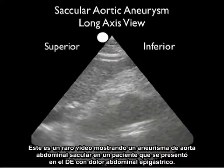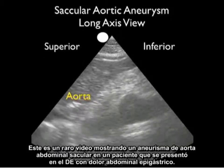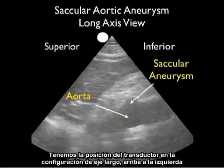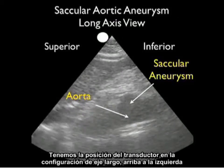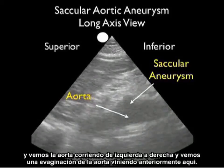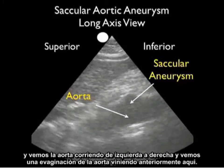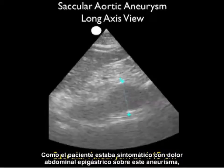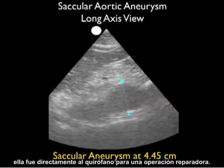This is a rare video clip showing a saccular abdominal aortic aneurysm in a patient who presented to the ED with epigastric abdominal pain. With the probe in long axis configuration, we see the aorta running left to right and an outpouching coming anteriorly — that's the saccular aneurysm, measuring 4.45 centimeters. Because the patient was symptomatic with epigastric pain over this aneurysm, she went directly to the operating room for operative repair.